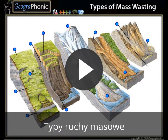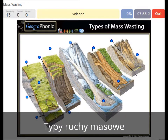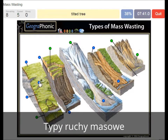I'm gonna press start. Volcano, rock avalanche, a headscarp, a rock slide, a damaged road, a tilted tree — you see slumping — a lahar or mud flow.